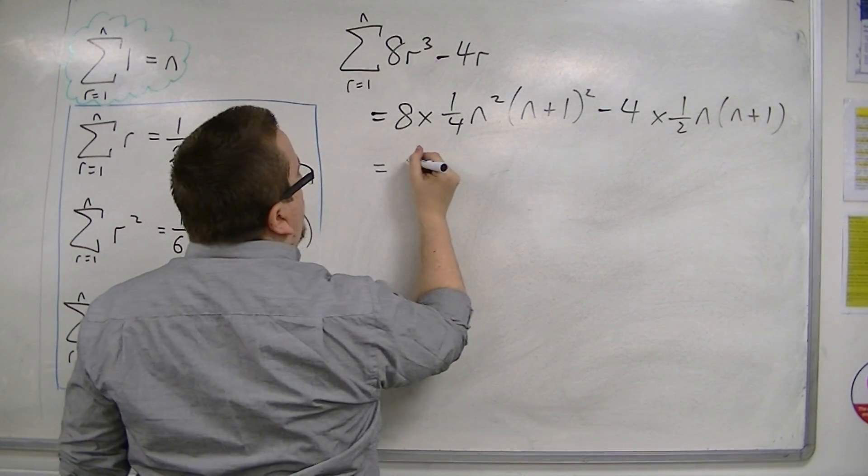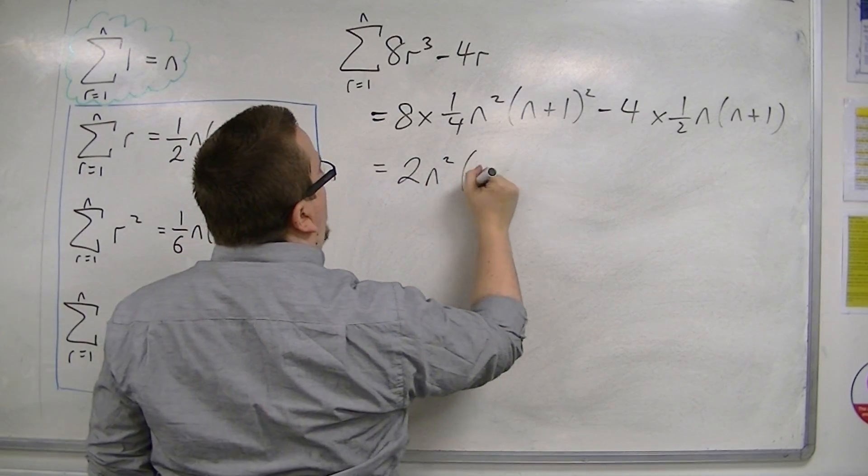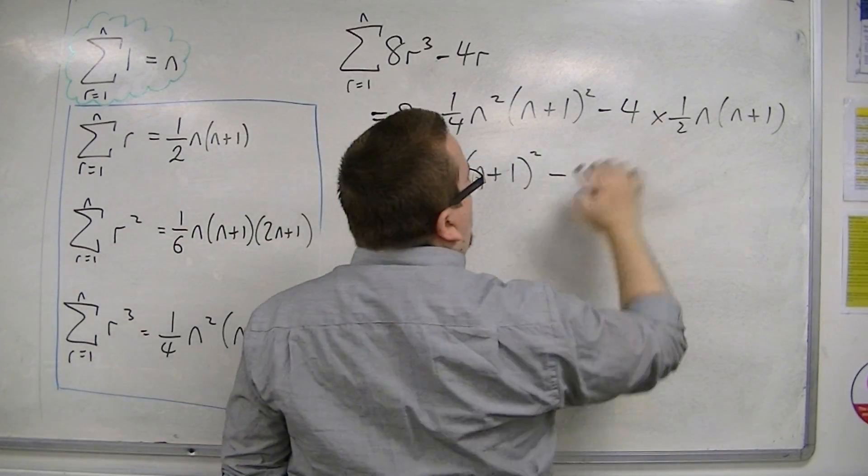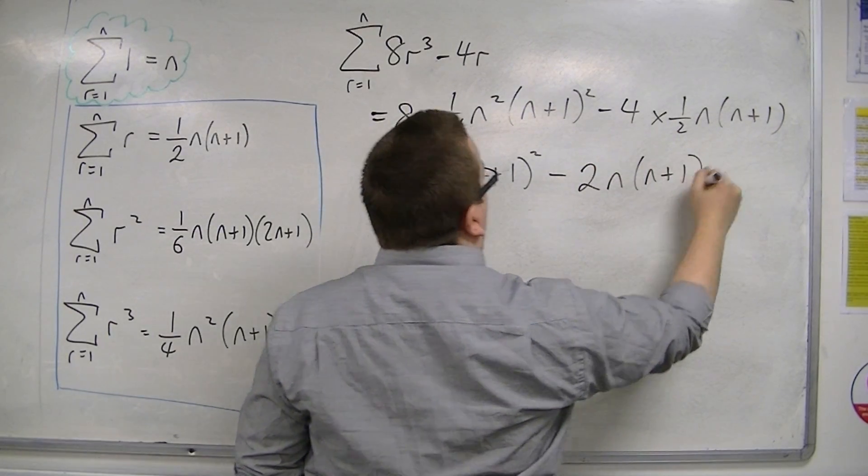So we've got 8 times 1/4, well that's 2, so 2n²(n+1)². And then we've got, take away 4 lots of 1/2, so that's 2n(n+1).